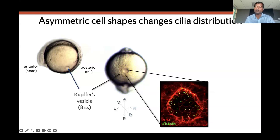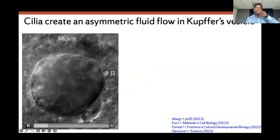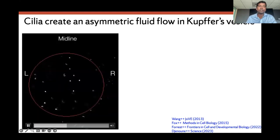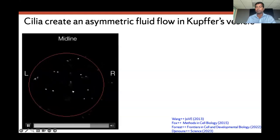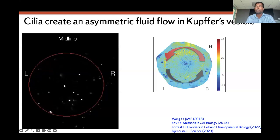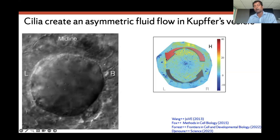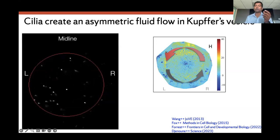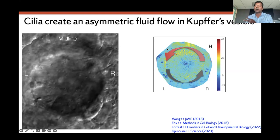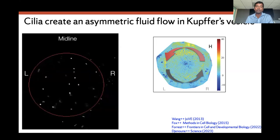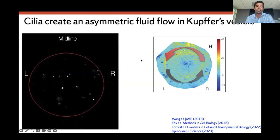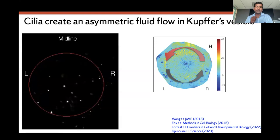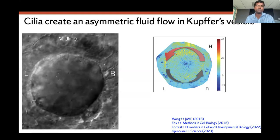Every Kupffer's vesicle has about 50 to 100 cells, and these small changes in asymmetric distribution of cilia give rise to a fluid flow that is always from left to right in a counterclockwise rotation. There is a micrometer-sized particle you can see always going from left to right. It is known that this left-right fluid patterning causes left-right patterning in the body. The shear stress due to this fluid flow is sensed around the left side of the anterior part of the organ, triggering downstream signaling for left-right patterning.